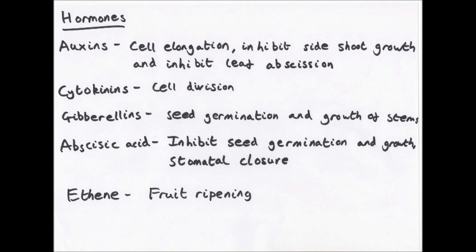Just like hormones in animals, plant hormones work in the exact same way. They have a complementary shape to receptors on certain cells and can bind together causing an effect to happen. The target cells are the ones that have receptors that bind to complementary hormones. These hormones move about by active transport, diffusion, and unlike animals, mass flow — that's in the phloem sap or in the xylem vessels.